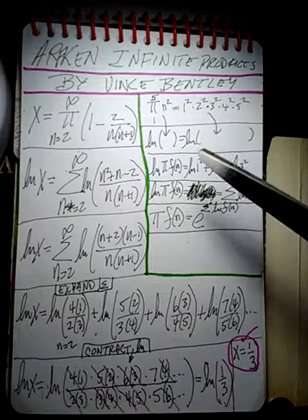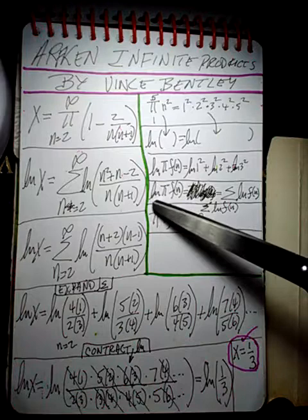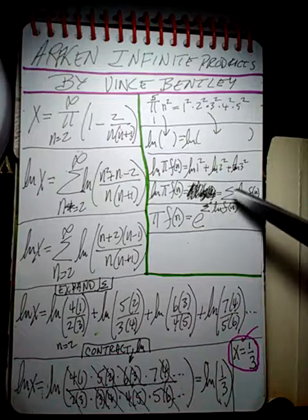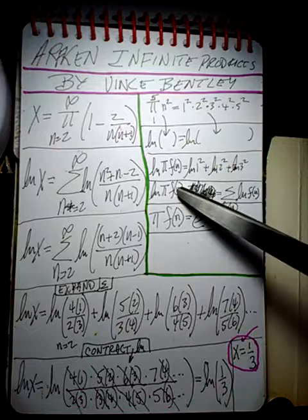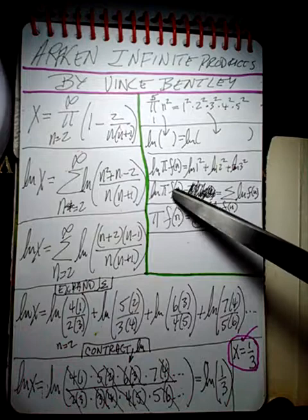And so that's what this illustrates. So the natural log of product of f of n, or a sub n some people call it, I call it f of n but you can call it a sub n if you feel uncomfortable with that. So the natural log of the product of f of n is equal to the sum of the natural log of f of n.